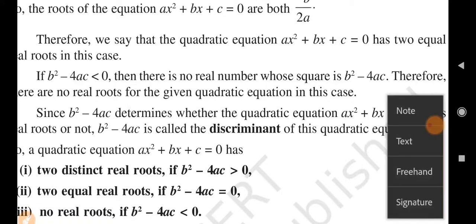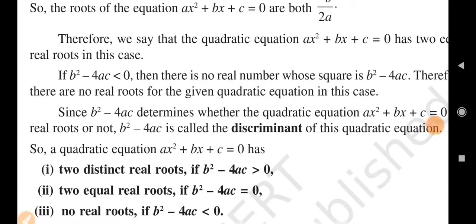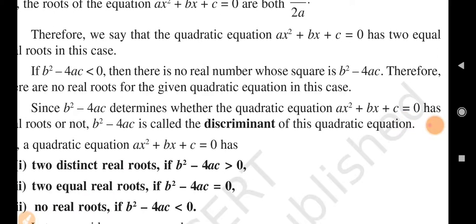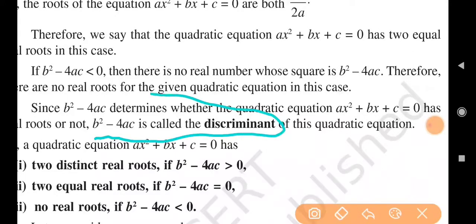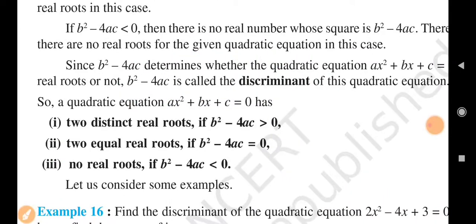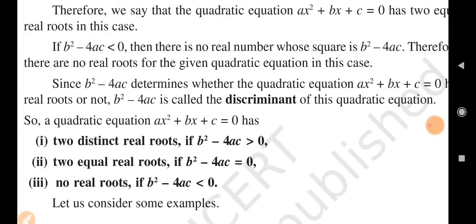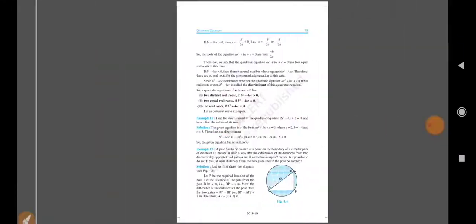To find whether ax square plus bx plus c equals 0 has real roots or not, we use b square minus 4ac, which is called the discriminant. Three conditions: if b square minus 4ac is greater than 0 — two distinct real roots; if equal to 0 — two equal roots; if less than 0 — no real roots.